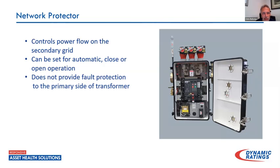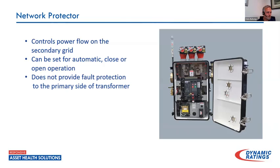The protector is on the other end of this and really doesn't provide any protection to the primary side of the transformer. It's there more or less to put the transformer in service and pull it out of service. If you're looking at the secondary grid and need more power, the transformer will engage; if we start seeing backfeed through that transformer, the protector automatically takes it out. So it's really more of an operations device than a protection device for the transformer — it's a protector for the customer more than the equipment.